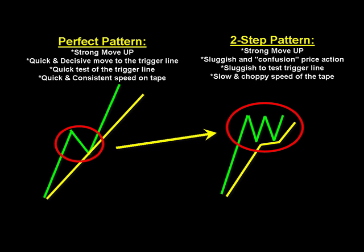Now let's compare that to a two-step pattern. This is obviously a red flag pattern — a heads up; we don't want to be taking this trade if we see this pattern. Again, it's a strong move up, but now we're going to see that move start to deteriorate. We're going to see sluggish confusion among the price action — a sluggishness to the test of the trigger line and a slow and choppy speed in the tape. We'll see a green candle, red candle, green candle — that sideways chop. It's a slow and choppy price action in and around this trigger line.